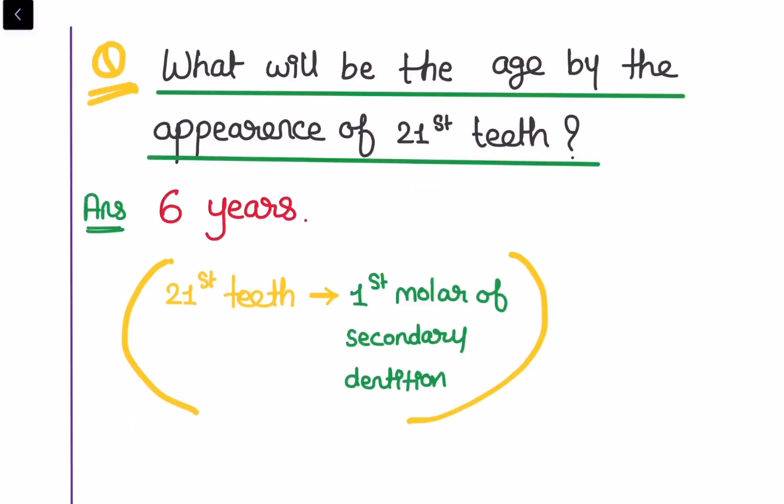Now one question may arise: what will be the age by the appearance of 21st tooth? The 21st tooth can be called as the first molar of the secondary dentition. So the answer will be by the age of 6 years. Similarly, if they ask what will be the age by the appearance of 20th tooth, then 20th tooth means the lateral incisors and this appears by the age of 8 years. So answer will be 8 years.